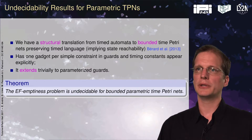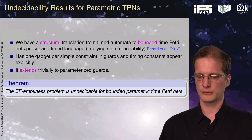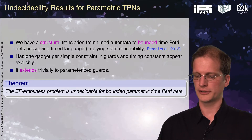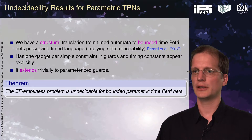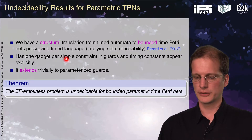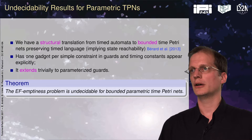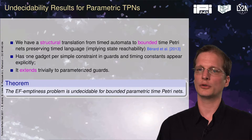We can actually relate to the results of parametric timed automata to get some decidability results for bounded time Petri nets. We have a structural translation from timed automata to bounded time Petri nets. This translation preserves timed languages, which implies it preserves state reachability. We have exactly one gadget for each constraint, and the timing constant appears explicitly.